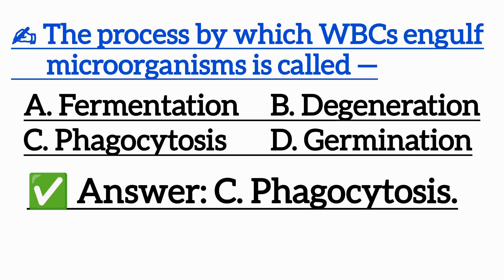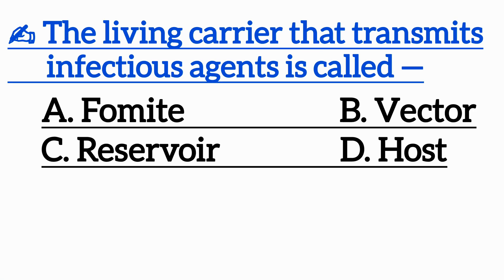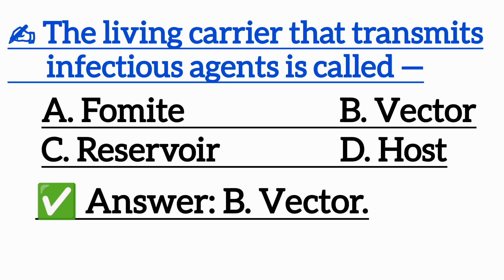Question 11: The living carrier that transmits infectious agents is called — Option A: Fomite, Option B: Vector, Option C: Reservoir, Option D: Host. Correct answer is Option B: Vector.